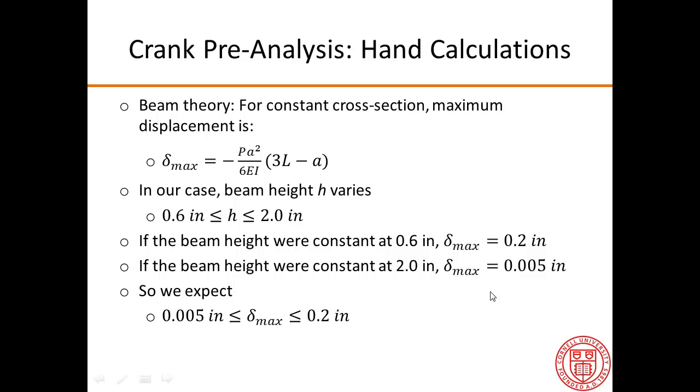The other hand calculation we can do is to predict what the expected maximum displacement is. Now, conventional beam theory, we have for constant cross-section, we have this equation for the maximum displacement. But in our case, the cross-section varies. So the beam height varies between 0.6 inches and 2 inches.